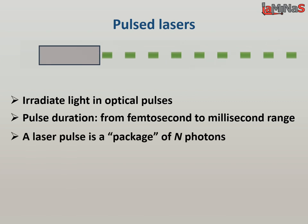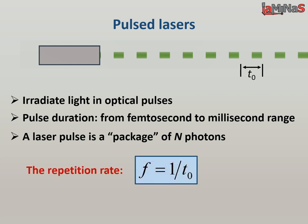A laser pulse is a package of a certain number of photons. The laser pulses are separated by a time interval T0. The pulse repetition rate F is defined by the inverse value of the period between pulses. The unit of the repetition rate is hertz.